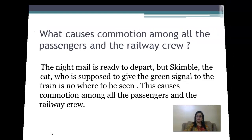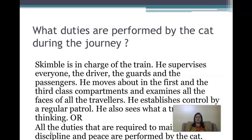What duties are performed by the cat during the journey? Skimble is in charge of the train. He supervises everyone — the driver, the guards, and the passengers. He moves about in the first and third class compartments and examines the faces of all travelers. He establishes control by regular patrol and also sees what a traveler is thinking. In short, all duties required to maintain discipline and peace are performed by the cat.